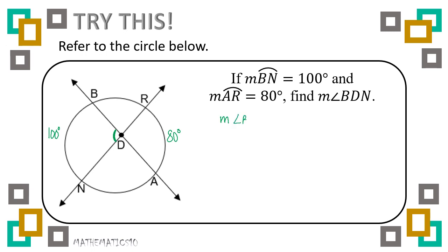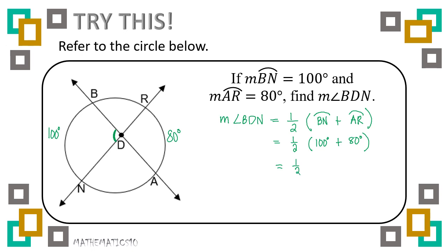We have: measure of angle BDN equals one-half the sum of its intercepted arcs. Arc BN measures 100 degrees and arc AR measures 80 degrees. Adding them: 100 plus 80 equals 180 degrees. One-half of 180 is 90 degrees. Therefore, the measure of angle BDN is 90 degrees.